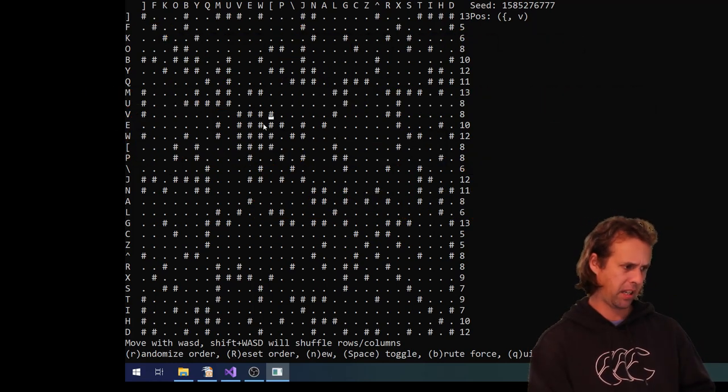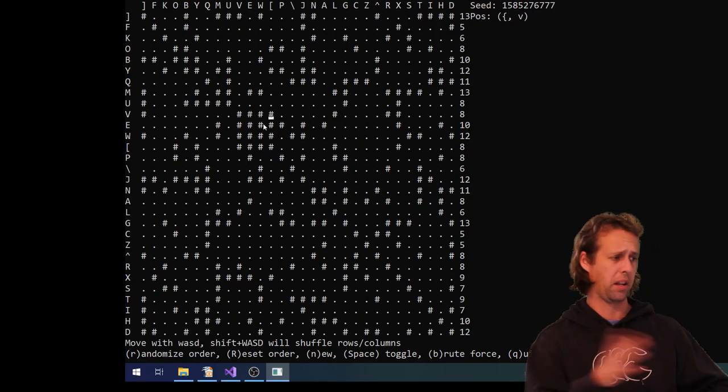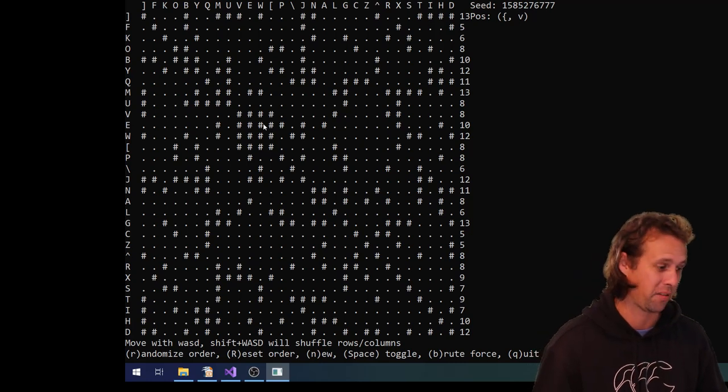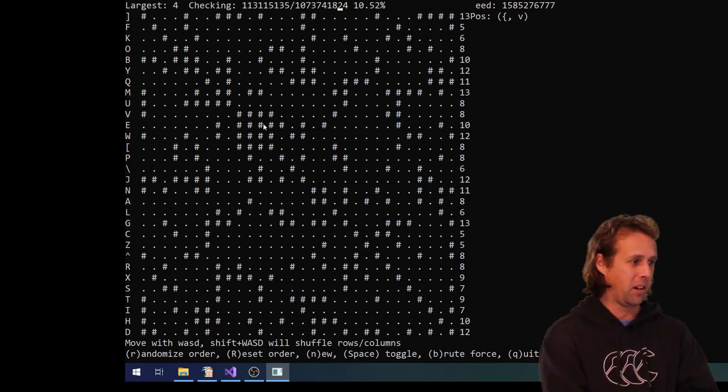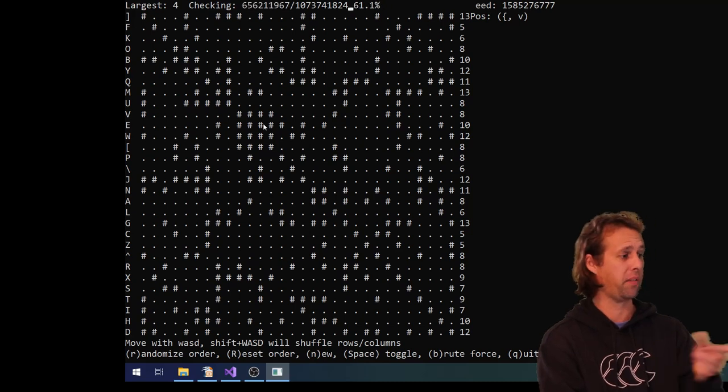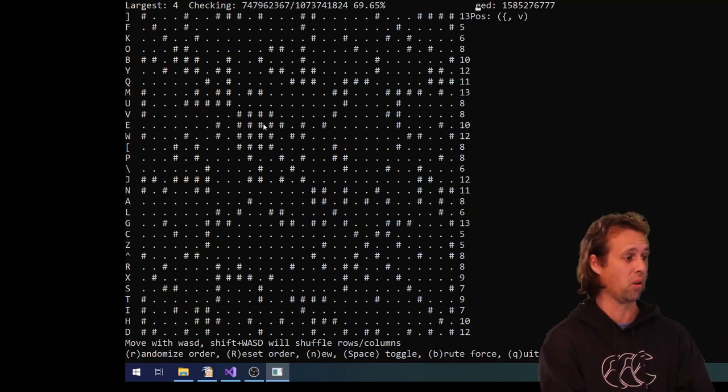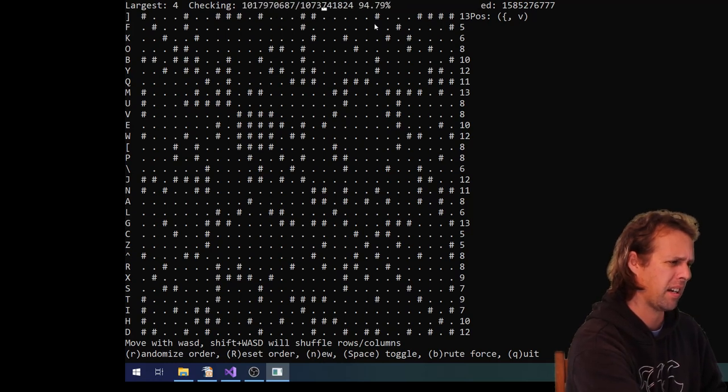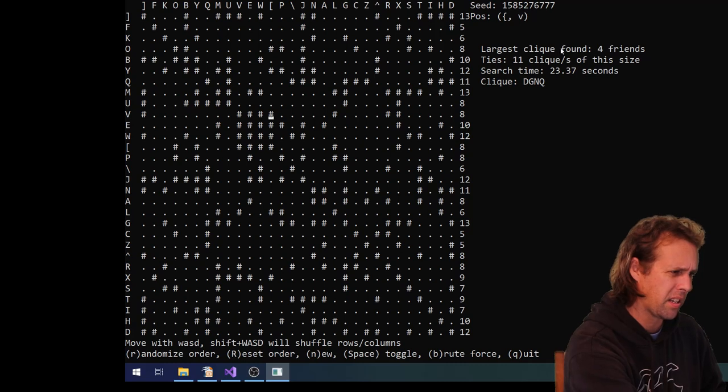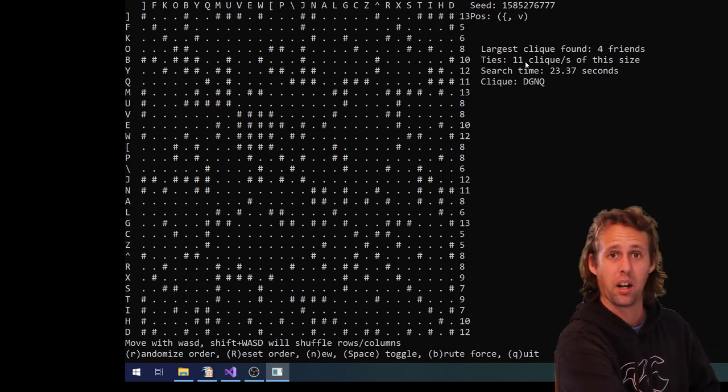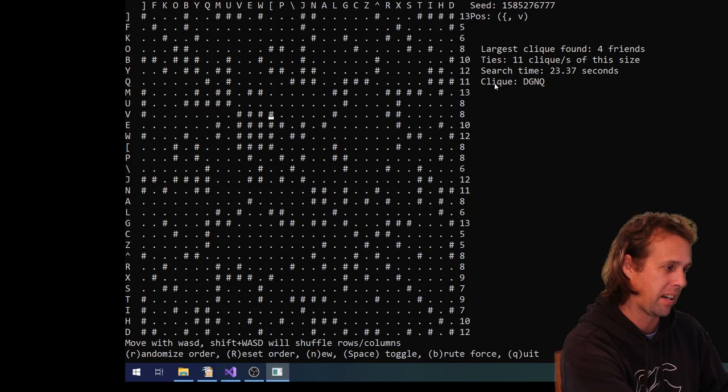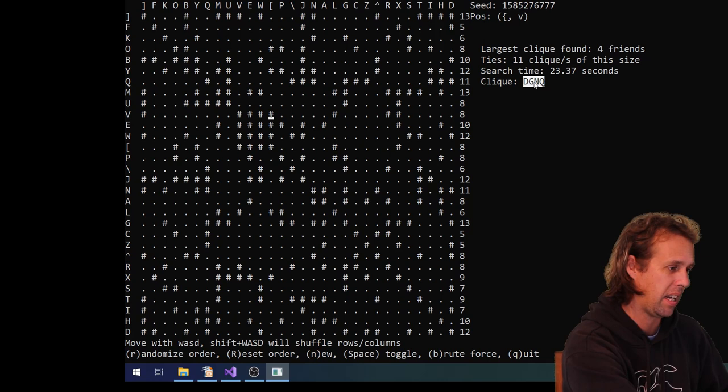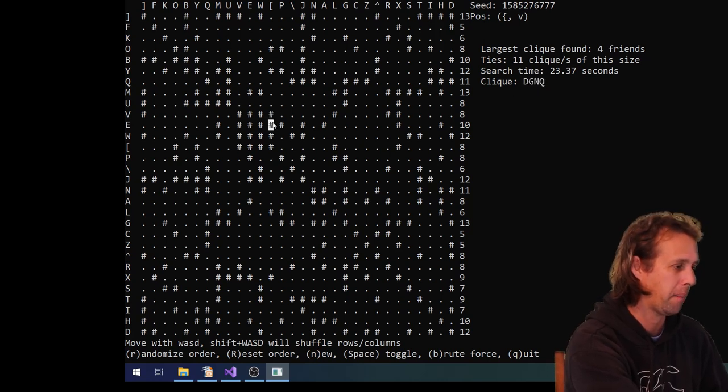The other thing about this program is that if you hit B, it'll brute force. Or it'll just run through everything, it'll find the largest clique, and it'll tell you how big it is. So let's hit B now, and we'll see if our clique of four was actually the largest. This does take a little while. So far it's found a largest clique of four. You can see up there the total number of cliques that it's got to check. That is two to the power of 30. So it says the largest clique found is four friends. There's 11 ties, and the search time was 23 seconds. An example of the four clique that it found is D, G, N, Q. But we also found a four clique.